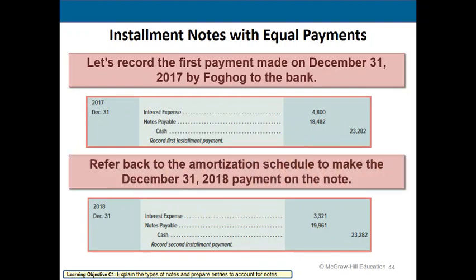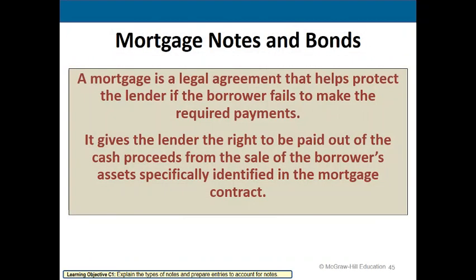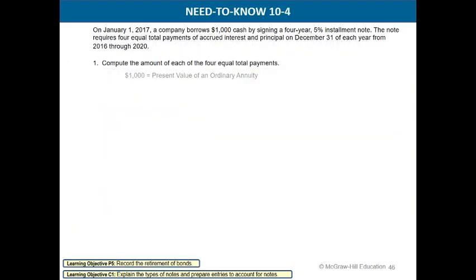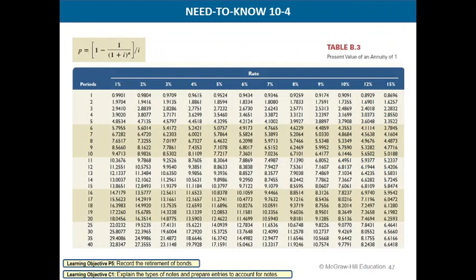Here are your entries for each year. Year one: interest expense $4,800, and note payable is the difference between the interest expense and the cash outlay. You have your entry for year two, and of course your entry for year three as well. That's chapter 10. Hope you enjoyed the course, and good luck.